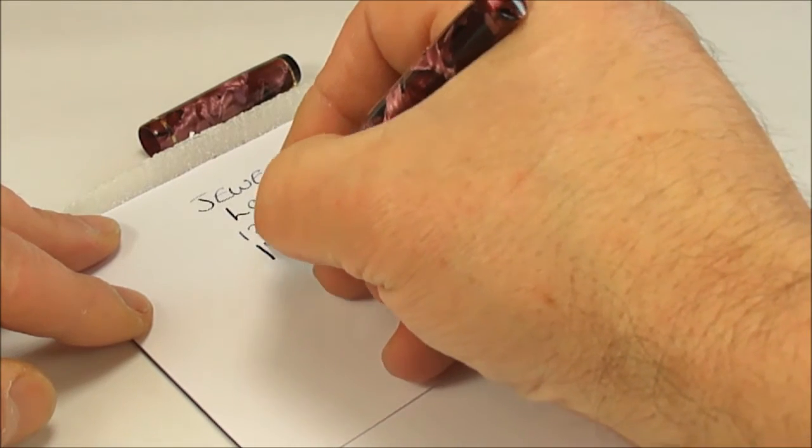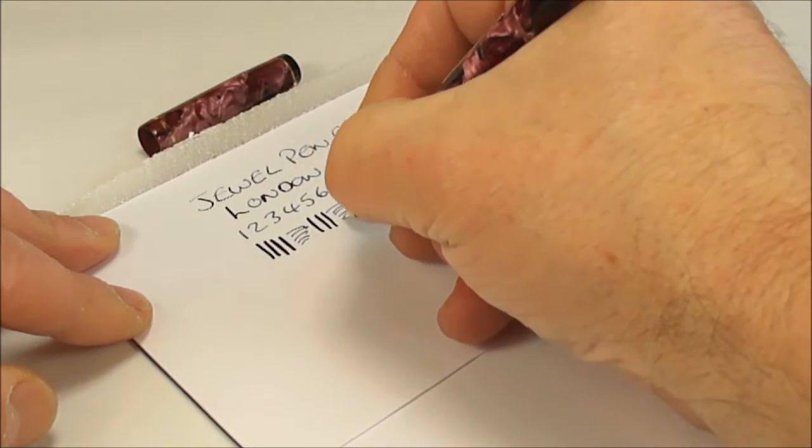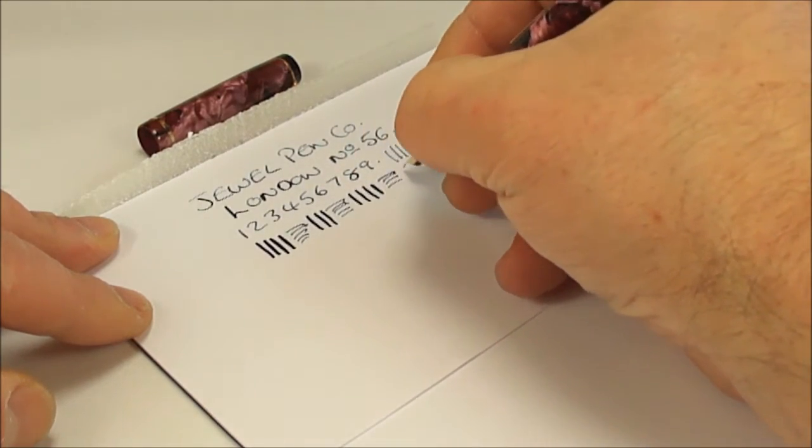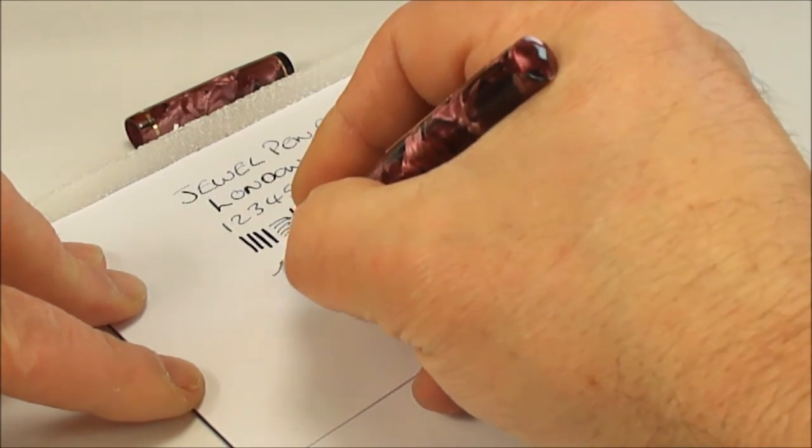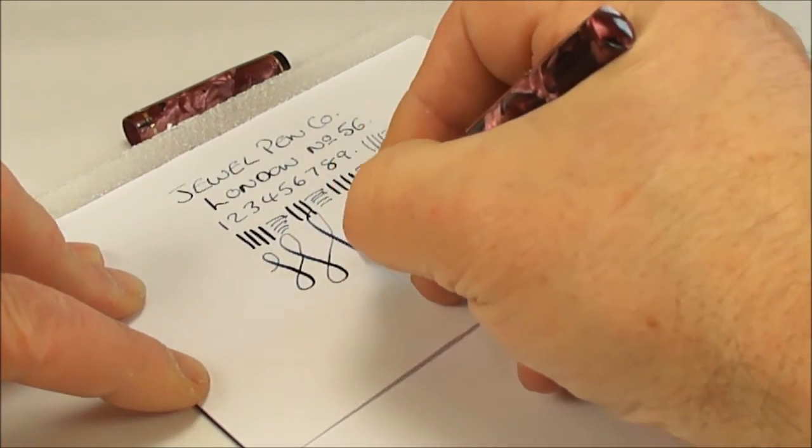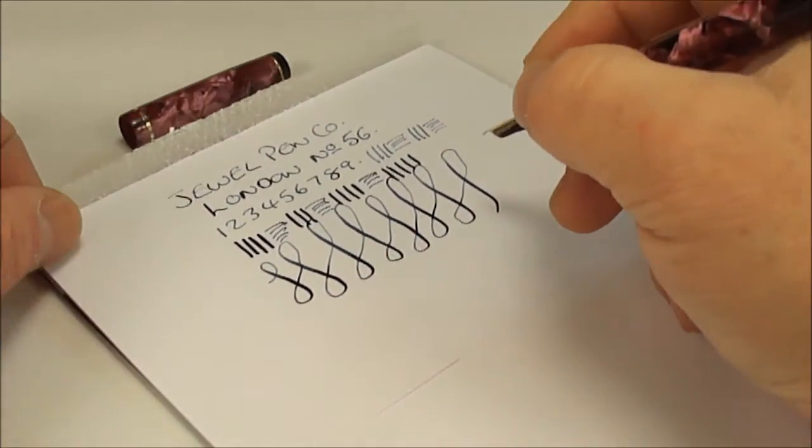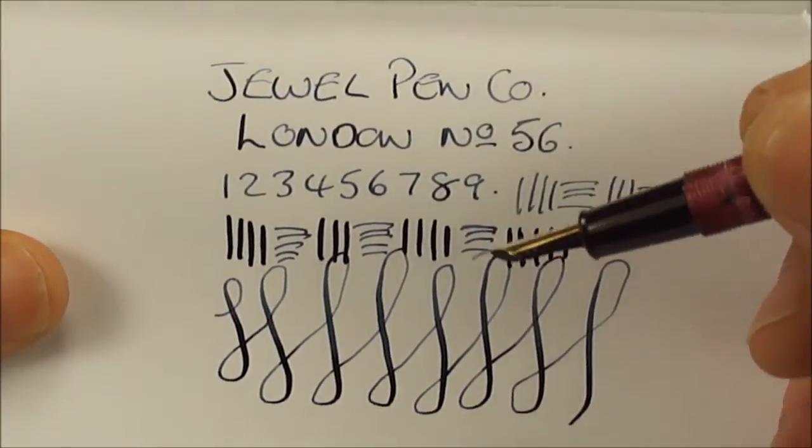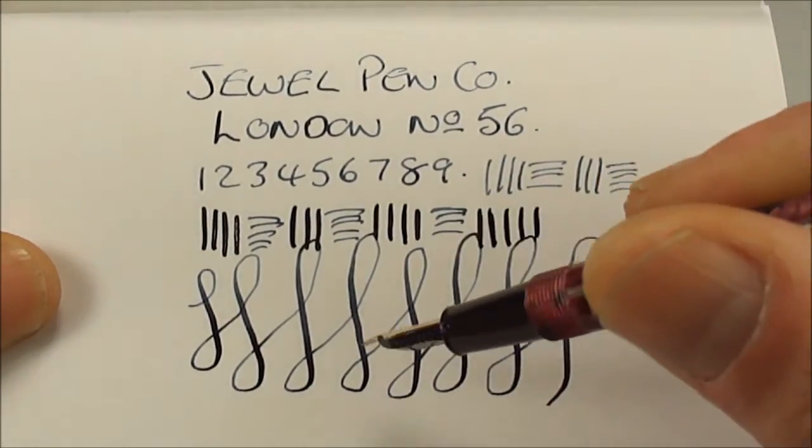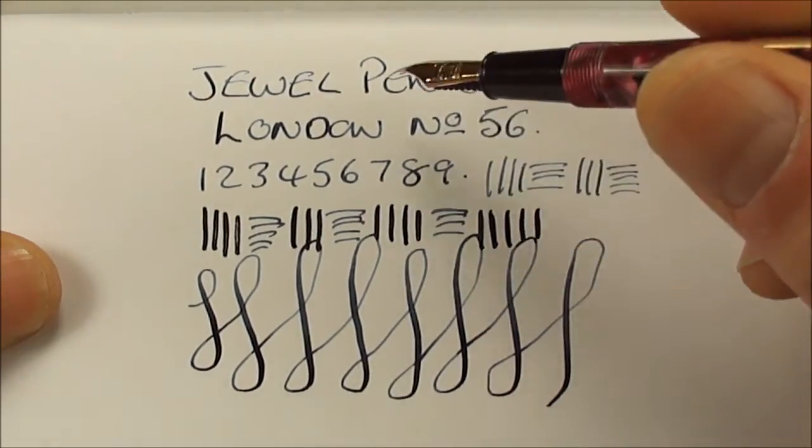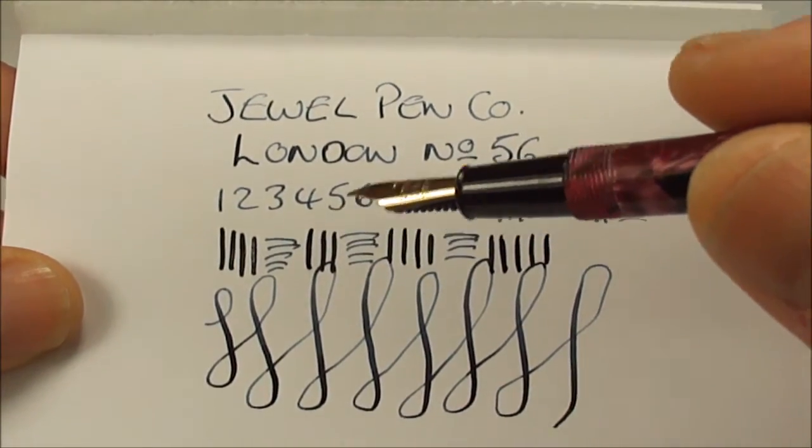What we want to know is, does it have any flex? I'm going to apply a little bit of pressure and you can see we are now getting some variation in the line. Yes, it's a slightly flexy nib. Let's do some figure of eights - on the downward stroke we can get a nice variation in the line. From fine to broad, a lovely variation, a lovely nib to write with, nice and smooth as well.